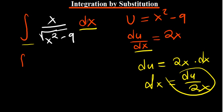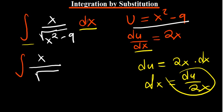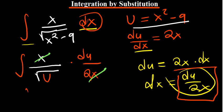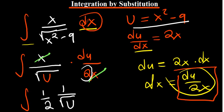We now have the integral of x divided by — where we have x squared minus 9, we say it's equivalent to u. That's why this is called integration by u substitution. So we have our u there, and we multiply by dx, which is du over 2x. We can see that the x on the numerator cancels with the x in the denominator. So we now have 1 over 2 multiplied by 1 over the root of u, then du.